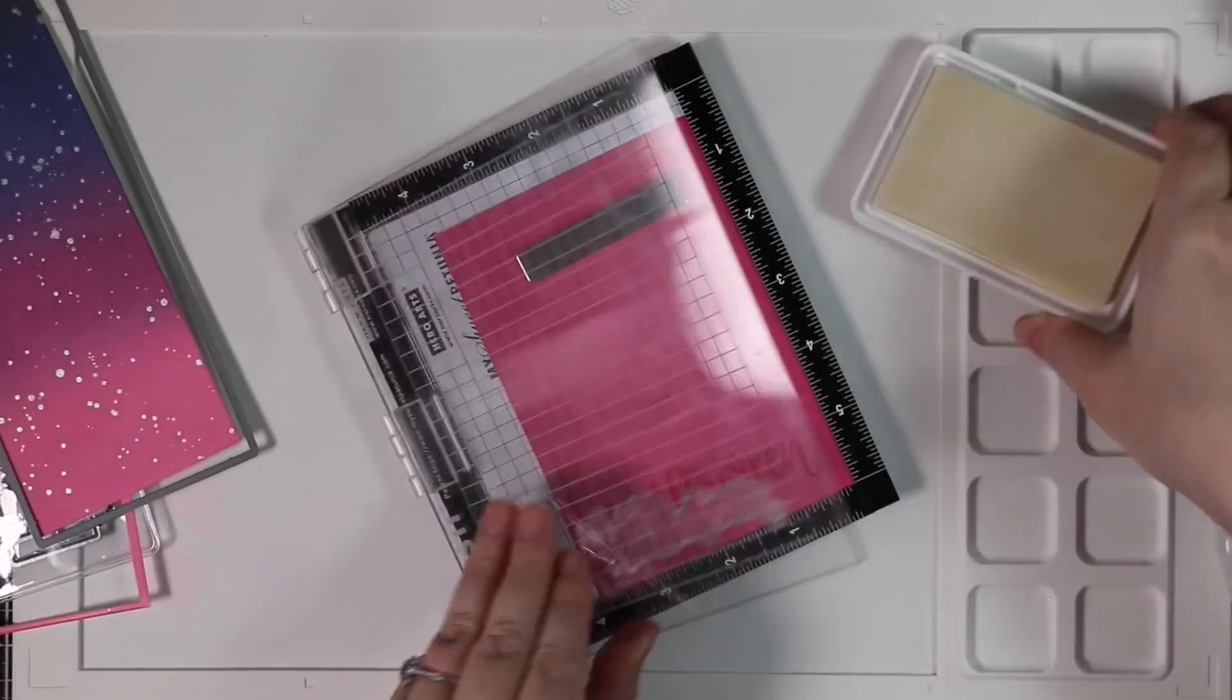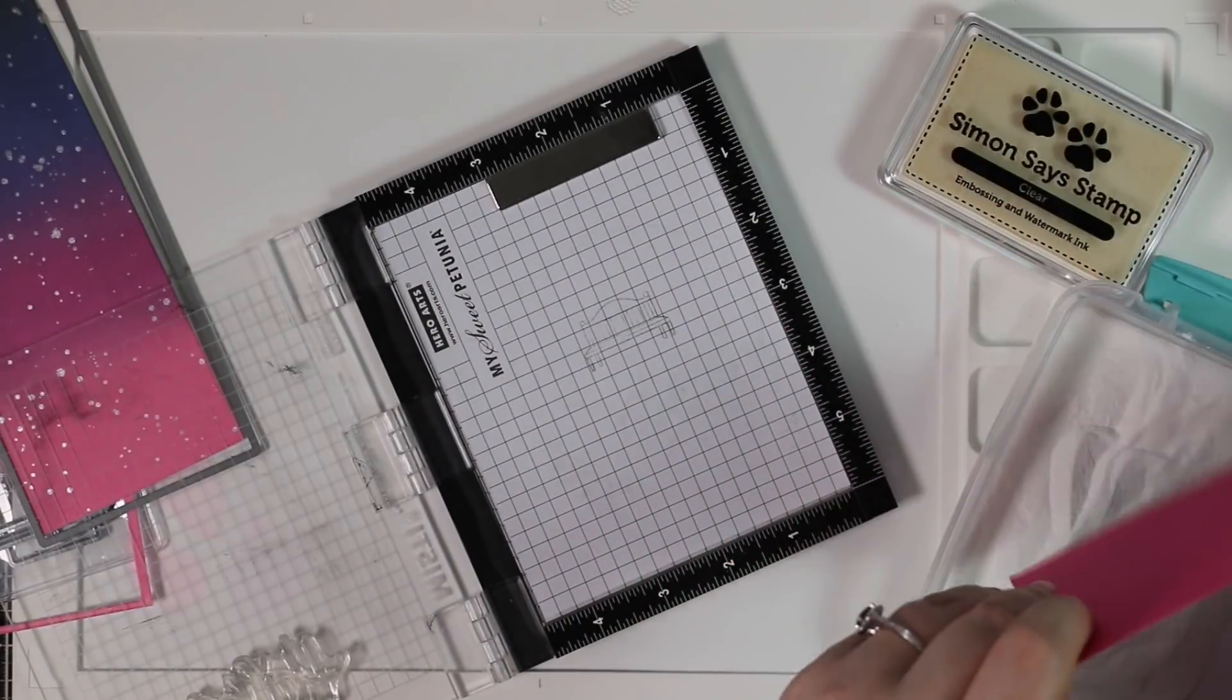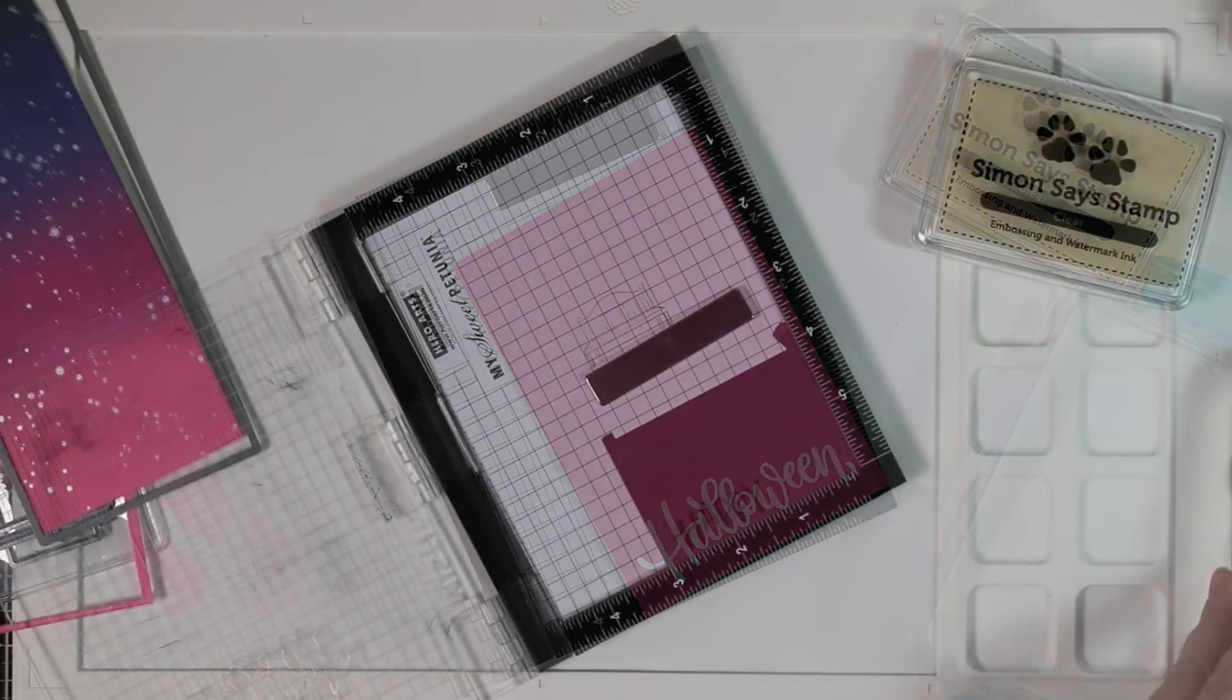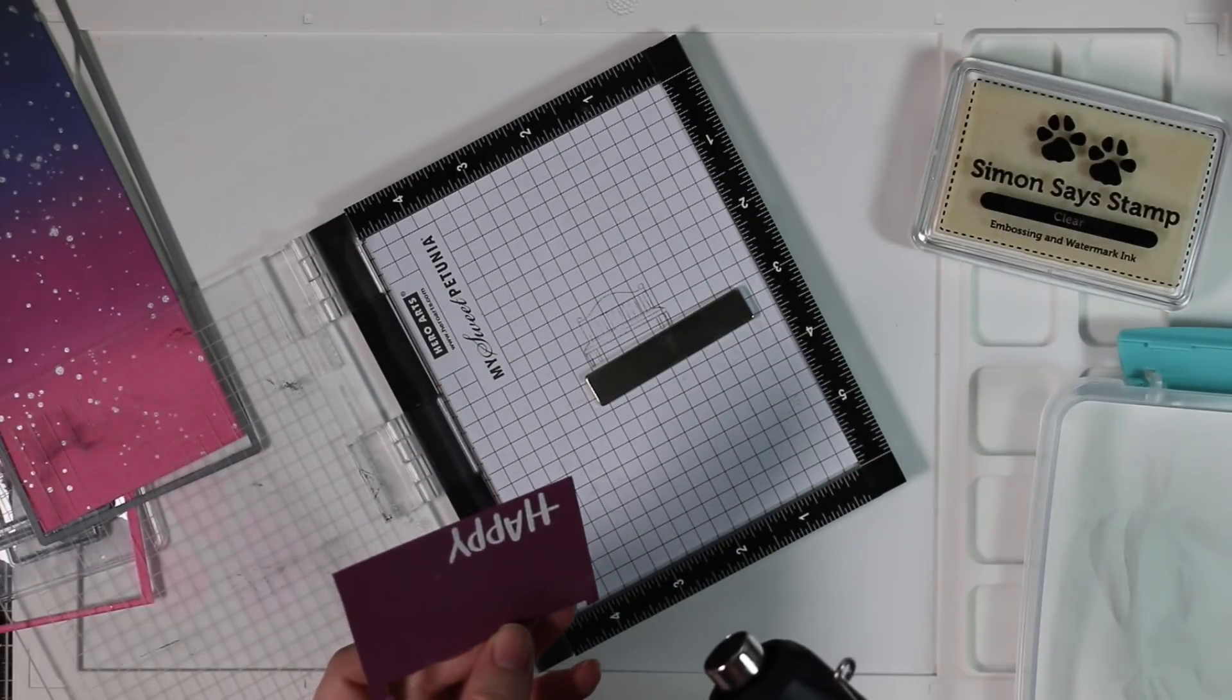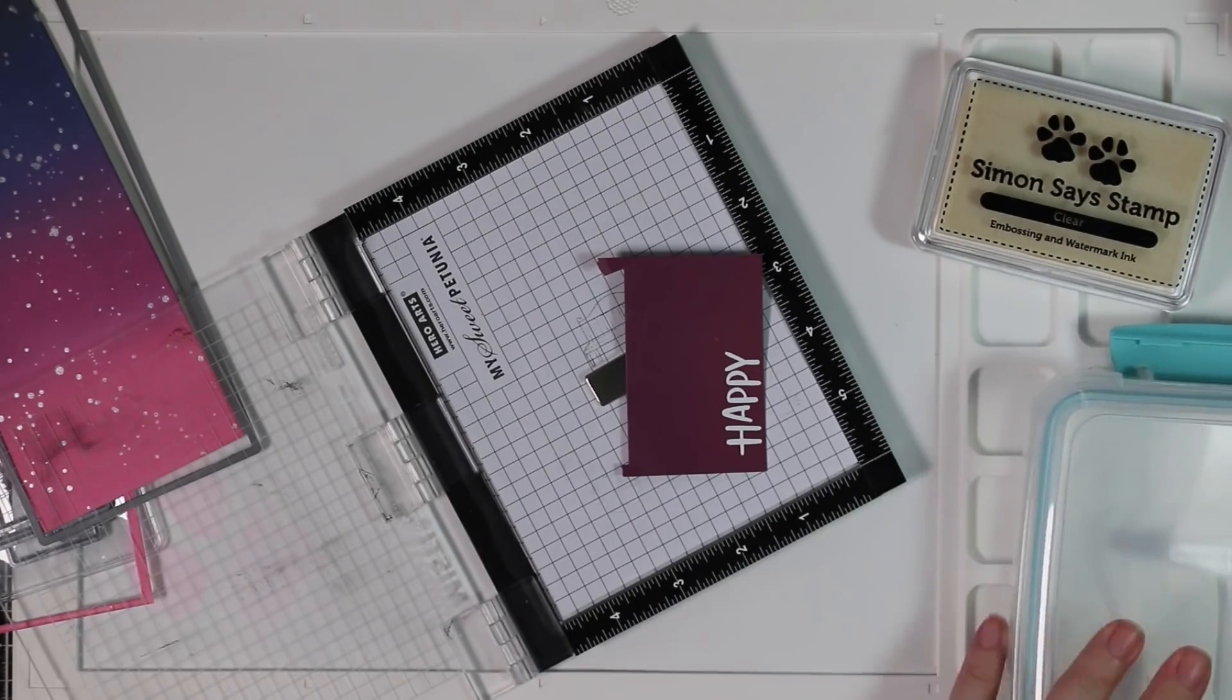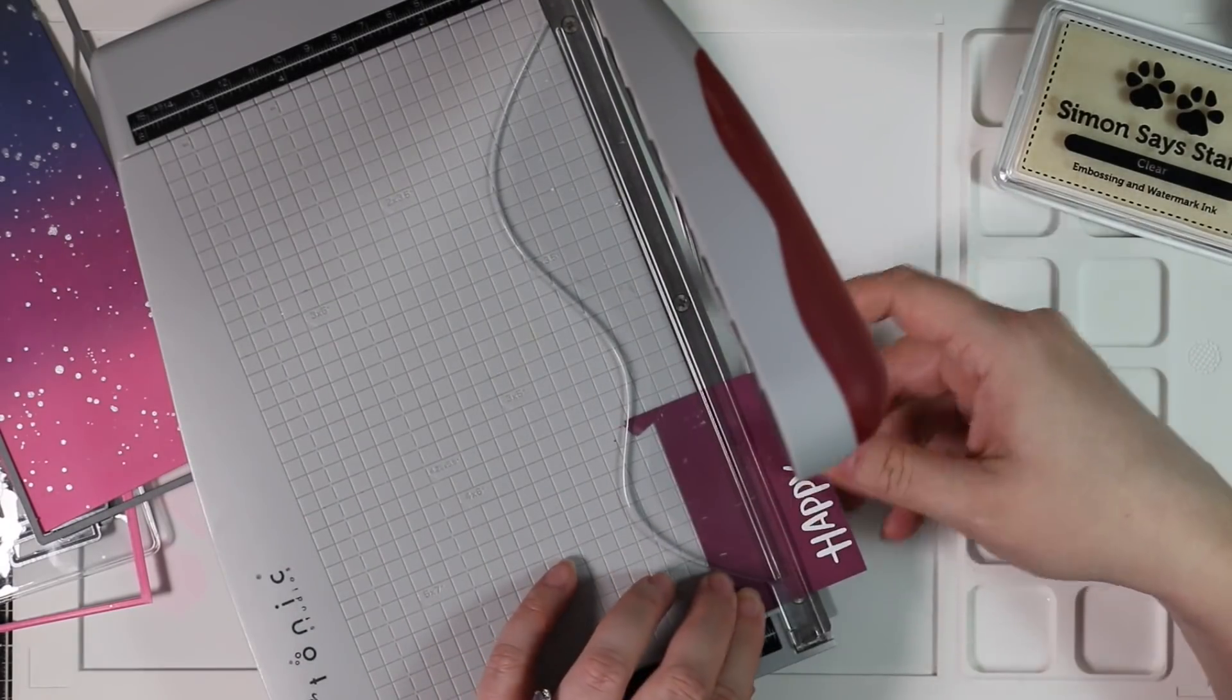And then I die cut that panel with the largest of the Simon Says Stamp slimline nested rectangles. And if you missed a previous video when I went on with that, no, I did not find the set I lost or misplaced. I don't know where it went. It hitched a ride somewhere. I don't even know what that set did, but I ordered a new set. So yeah, usually when you order a new of whatever you've misplaced, the other thing shows up. I'm going to go on a complete side rant. So anyway, back to the card.